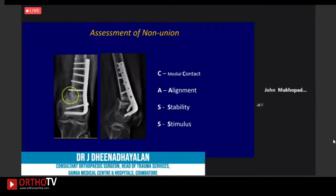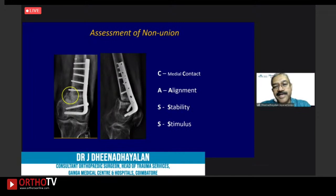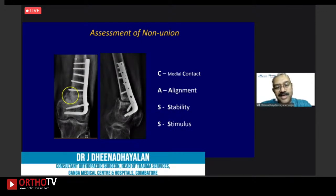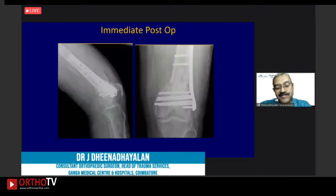Any non-union assessment is based on contact, alignment, stability, and biology. Any distal femur non-union must have good medial contact and centered alignment — hip, knee, and ankle must be perfectly centered — along with adequate stability and bone graft for biology. Based on these concepts: the shaft was medialized, a medial fibular strut graft was added with autografts. At six weeks there is healing, at four months good progression, and at one year excellent result.